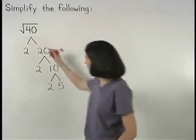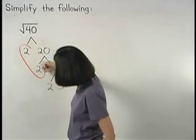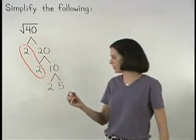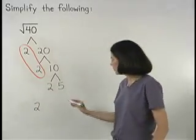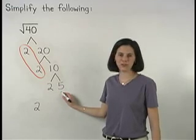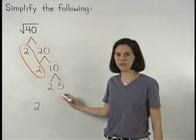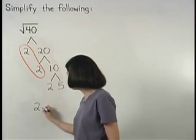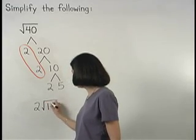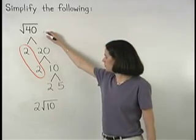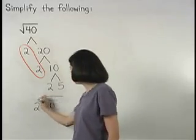So we have a pair of 2s, which means that a 2 can come out of the radical, and we have a 2 and a 5 that don't pair up, which means that a 2 and a 5 stay inside the radical, multiplying together to make 10. So the square root of 40 simplifies to 2 root 10.